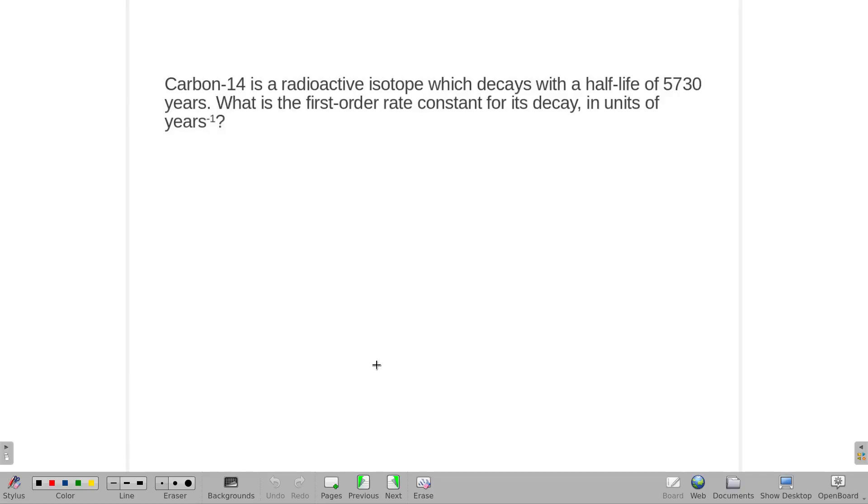Carbon-14 is a radioactive isotope that decays with a half-life of 5,730 years. What is the first-order rate constant for this decay?